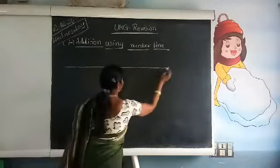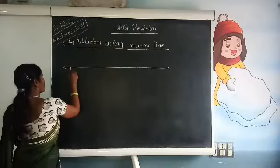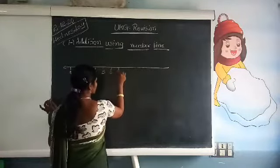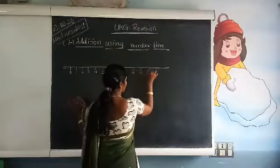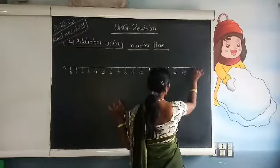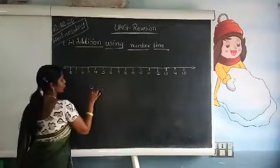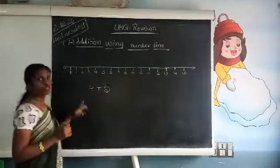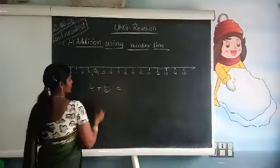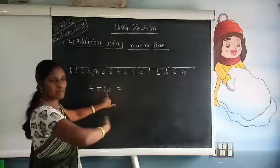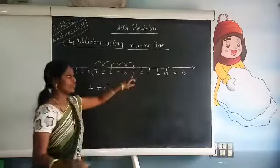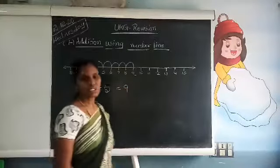Take one number line: 1, 2, 3, 4, 5, 6, 7, 8, 9, 10, 11, 12, 13, 14, 15. Here we have 4 plus 5. The first number is 4, so circle 4. The second number is 5, so we have to jump 5 steps to the right hand side: 1, 2, 3, 4, 5. What is the answer? 9. In this way you have to do.